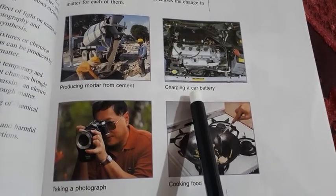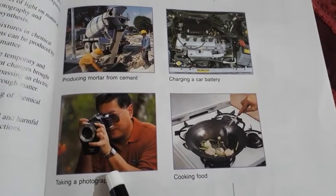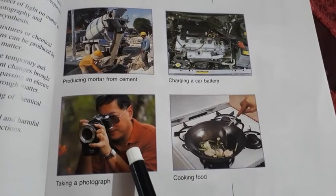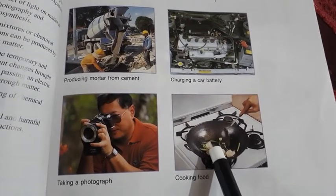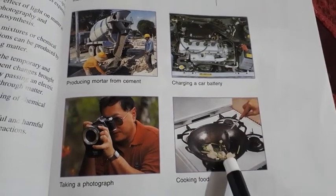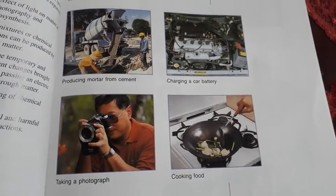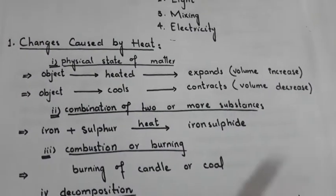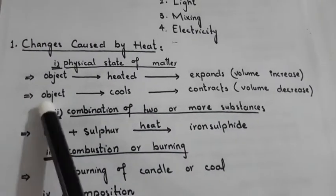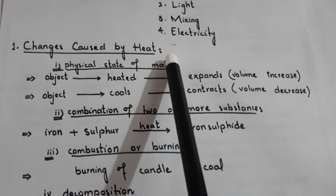Taking a photograph is a change due to light, and cooking food is a change achieved due to heat. So first of all I will tell you about the changes that are caused by heat.